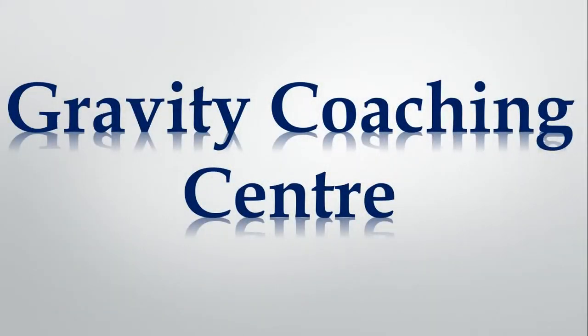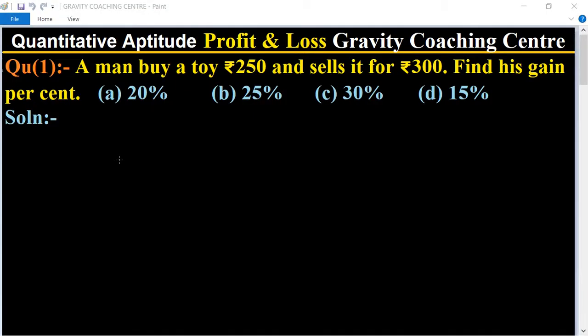Welcome to our channel, Gravity Coaching Center. Quantitative Aptitude, chapter Profit and Loss. Question number one: A man buys a toy for rupees 250 and sells it for rupees 300. Find his gain percent.